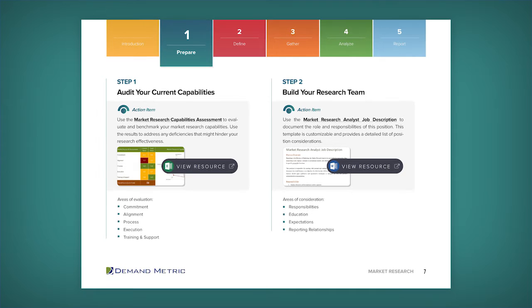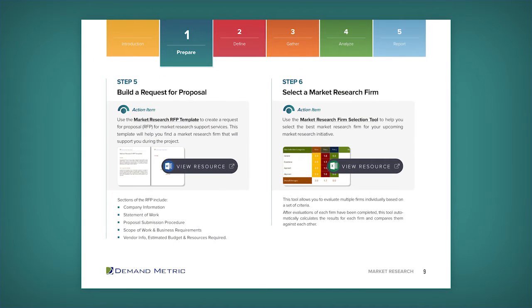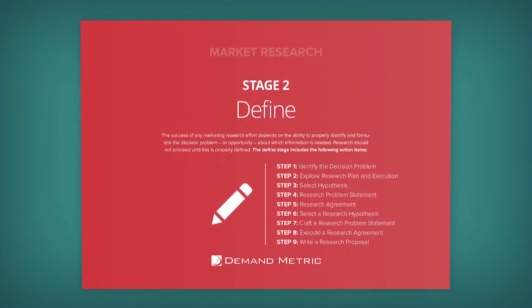Here, the first step is to audit your current capabilities, build your research team, identify goals and objectives, investigate top research firms, build a request for proposal, and ultimately select a market research firm as your partner.